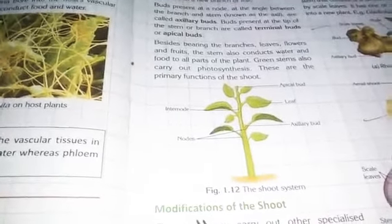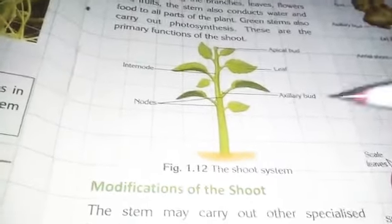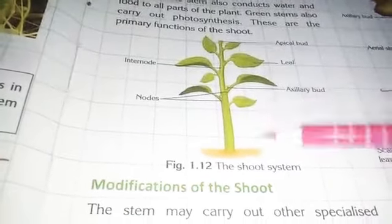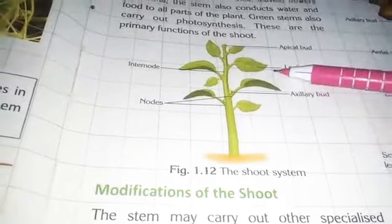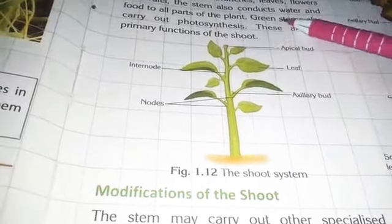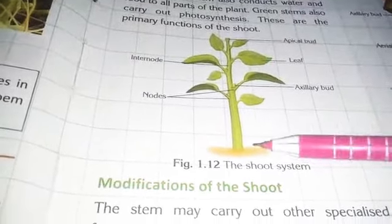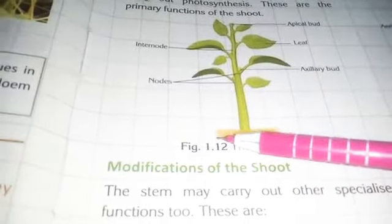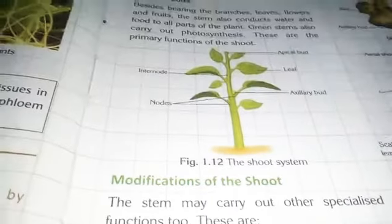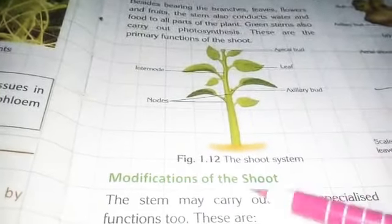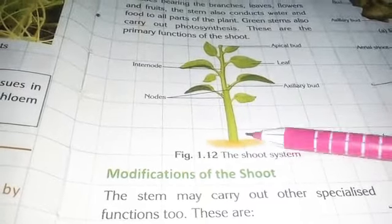The shoot system grows upwards, towards sunlight, and away from gravity — because gravity works downwards, the stem and shoot system grow upwards, away from gravity.